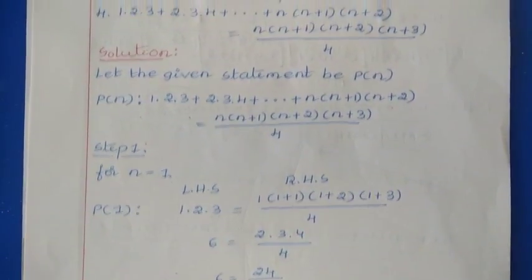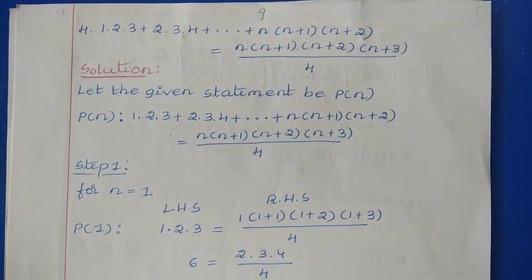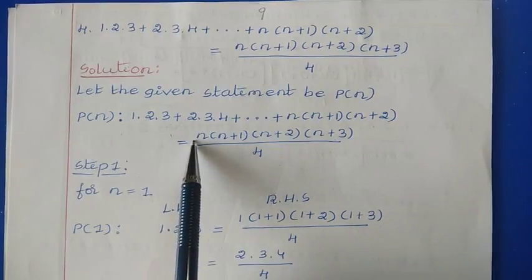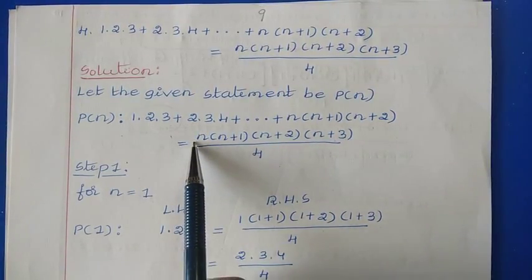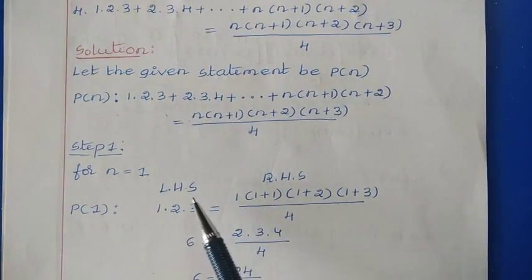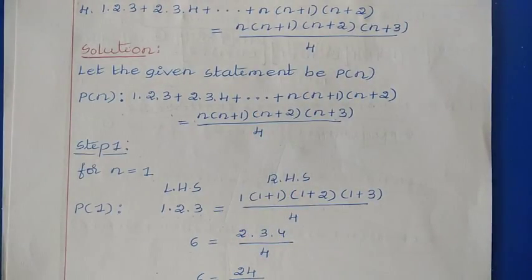Next, we will see the fourth problem. The fourth problem is: 1×2×3 + 2×3×4 + ... + N(N+1)(N+2) = N(N+1)(N+2)(N+3)/4. Let the given statement be P(N). We will start with step 1, checking the given statement for N=1, that is P(1).